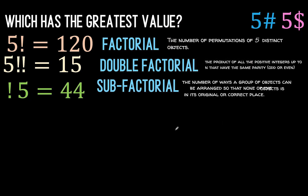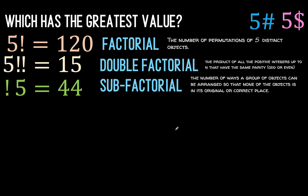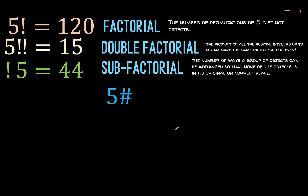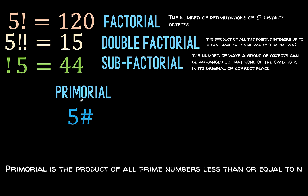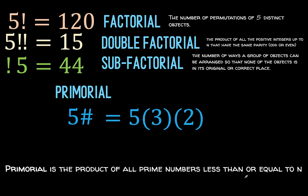Now let's remember this result. The next one is the symbol 5 pound. This is primorial, from the root word prime. So the primorial of a number is the product of all prime numbers that are not greater than n.